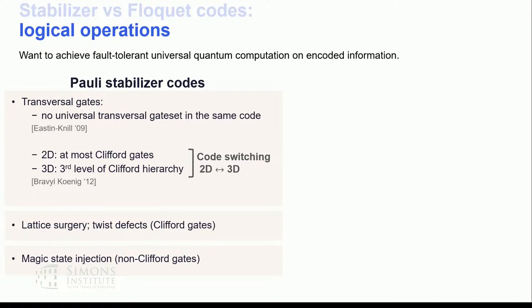For poly-stabilizer codes, there does not exist a single code which admits a universal transversal gate set, and the dimension limits our ability to reach certain levels of the Clifford hierarchy. This problem is usually solved by code-switching, but at the cost of spatial overhead. Other methods, such as lattice surgery and defect braiding, give us Clifford gates in two dimensions with temporal overhead, and for non-Clifford gates, people usually do magic state injection.